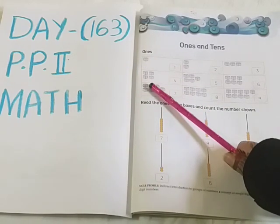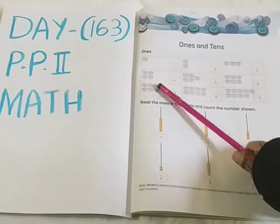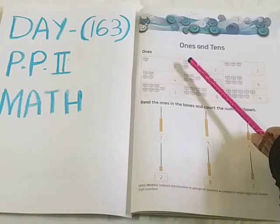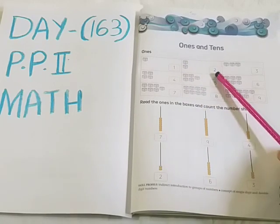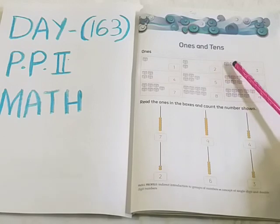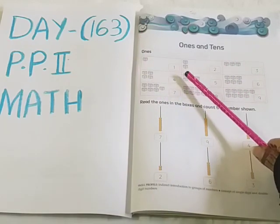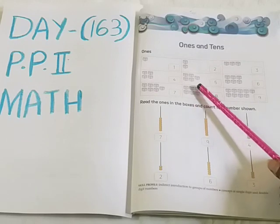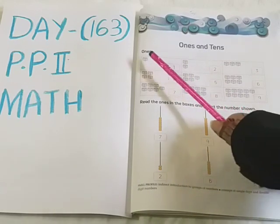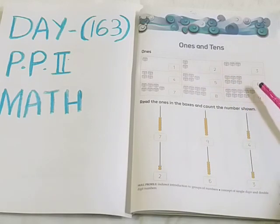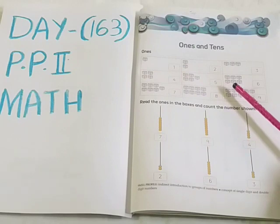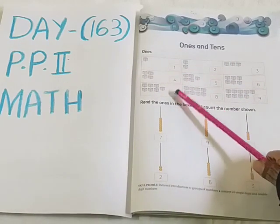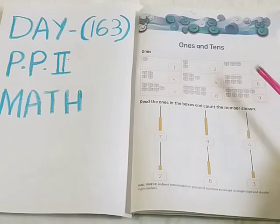Let's see how many blocks are here — 7 blocks. You can see number 7. Number 7 also comes under Ones. 2 also comes under Ones. 3 also comes under Ones. Number 5 also comes under Ones. Number 6 also comes under Ones. Number 9 also comes under Ones. A single digit number is known as Ones.